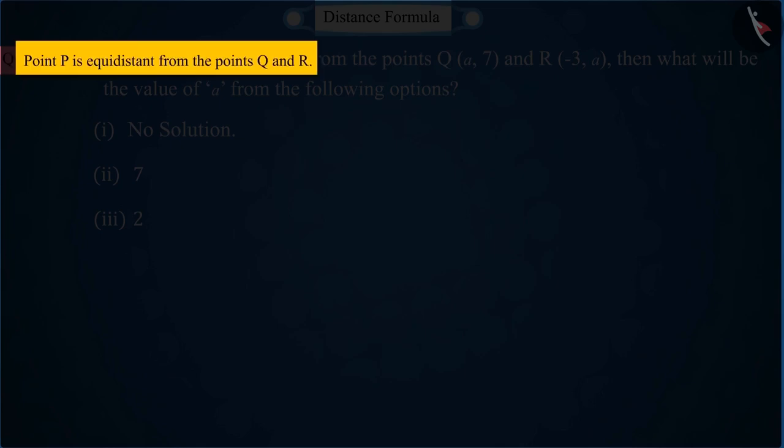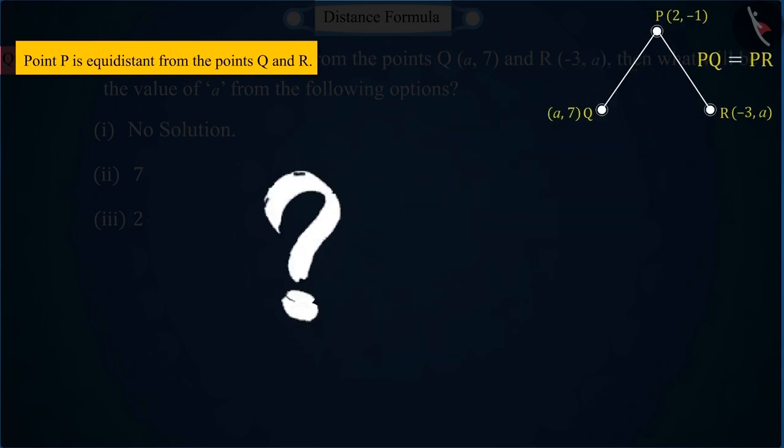From the question, we get to know that point P is equidistant from the points Q and R. Let's make an imaginary picture of it which somewhat looks like this. Can you tell how can you find the value of A from PQ and PR?